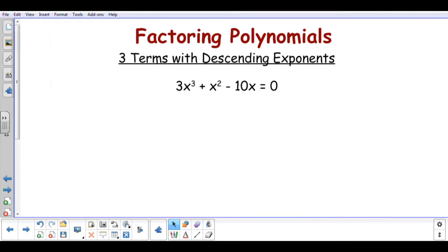The second type of polynomials that we are going to see are polynomials with three terms with descending exponents. That means the exponents will be in order. So here I have an x to the third, then an x squared, and then an x.